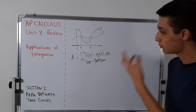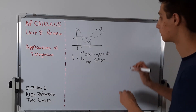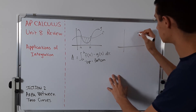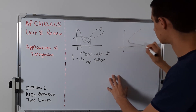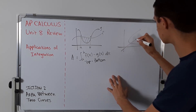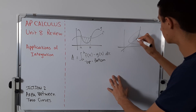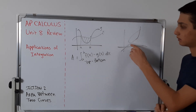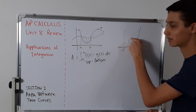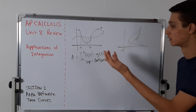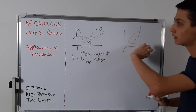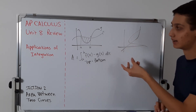Now there might be cases where you don't know what's on the top and what's on the bottom. For example, if you have a function like this and another function like that, you don't really know what's on top and bottom because they overlap. What you can do is turn these into functions of y.